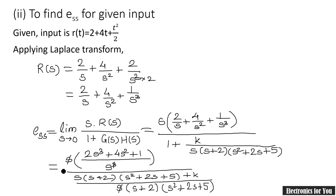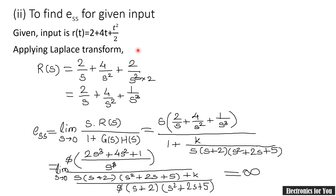Don't forget we have limit s tends to 0. After applying the limit, we can see that in the denominator there will always be s remaining. Putting s equals 0 in the denominator gives 0, so E_ss becomes infinity. This is because the input contains a parabolic component (t²/2). For a type 1 system, a parabolic input always gives infinite steady state error. This matches our prediction.